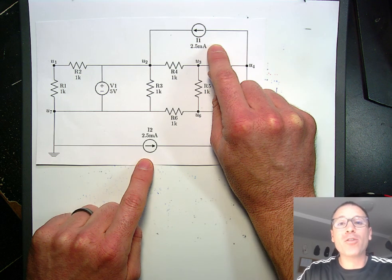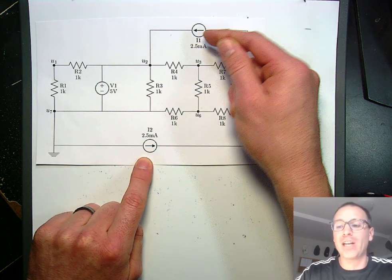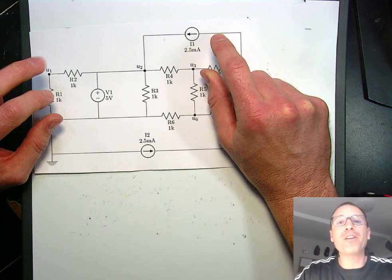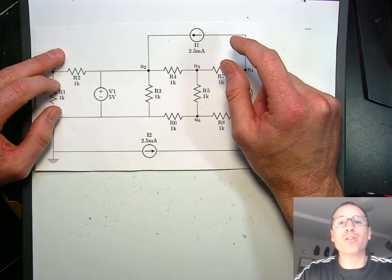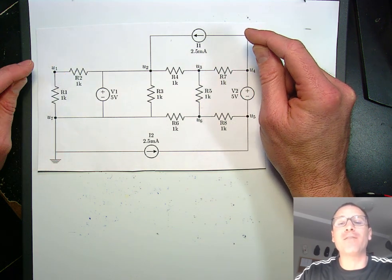The current passing through the current sources should have the same reference direction as the actual connectivity of each current source. And then for every voltage drop and current reference direction, we should always say that the positive to negative drop reference defines the arrow for the current.